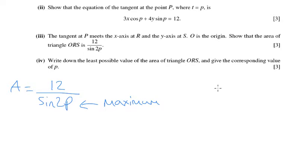And we know that the maximum of a sine graph is 1. So we want sine 2P. So it's at its maximum when sine 2P equals 1.